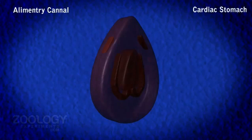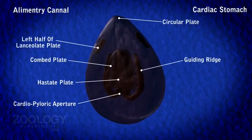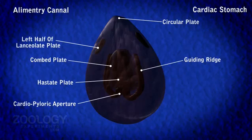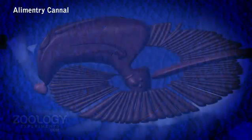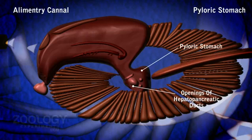The inner cuticular lining or intima of the cardiac stomach presents numerous inconspicuous longitudinal folds covered by minute bristles. The pyloric stomach is a small and narrow chamber lying below the posterior end of the cardiac stomach.